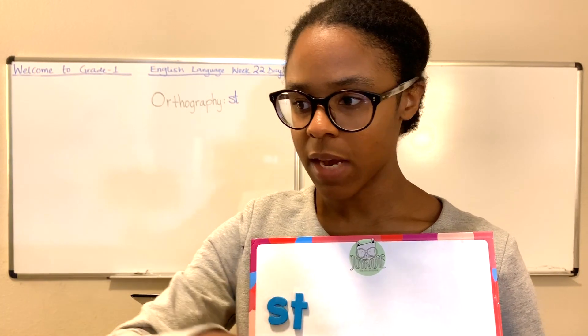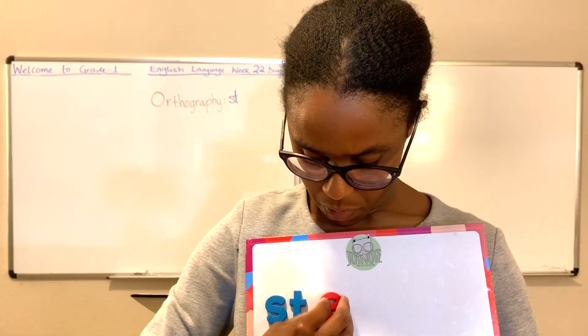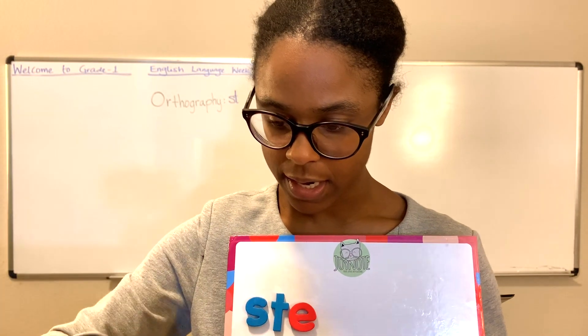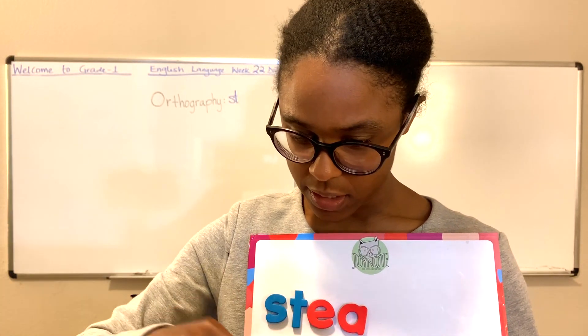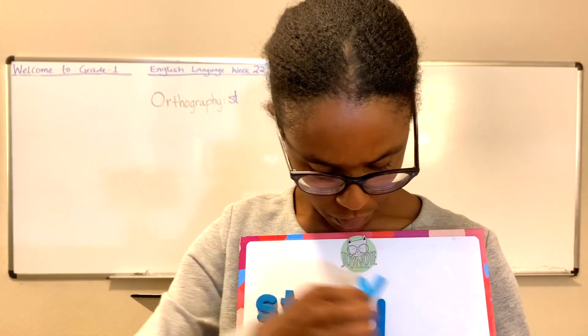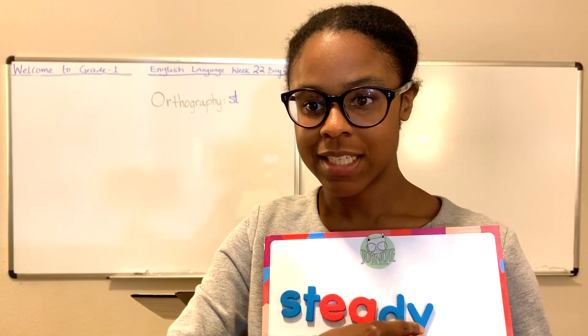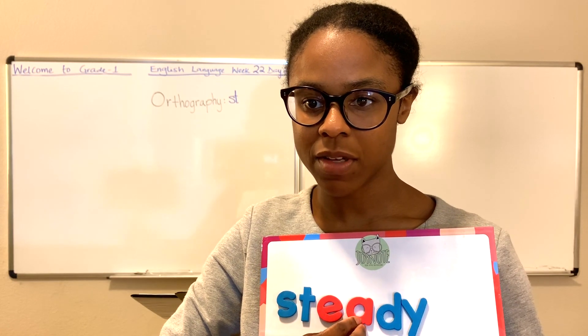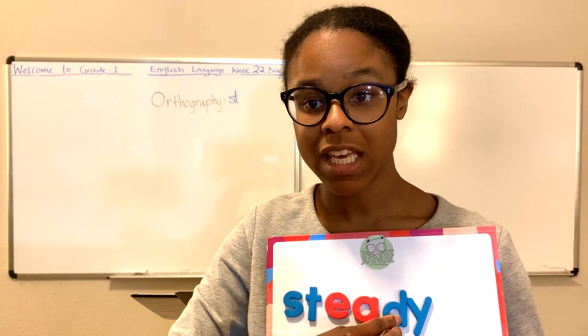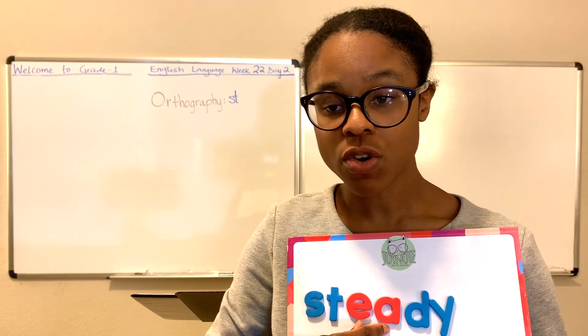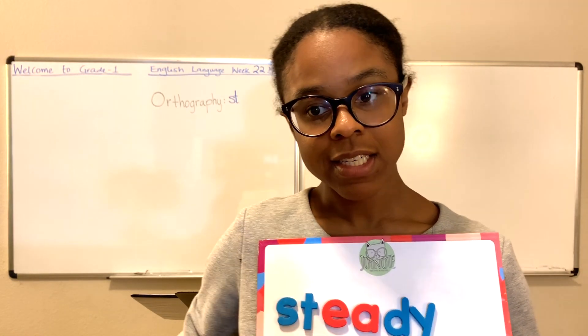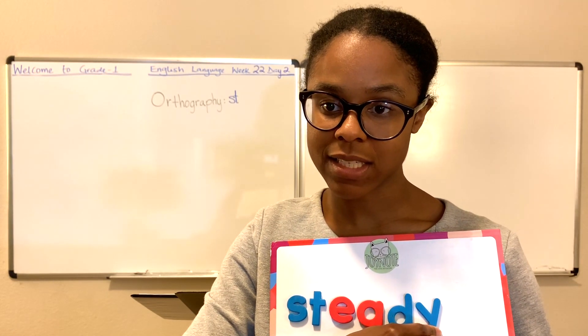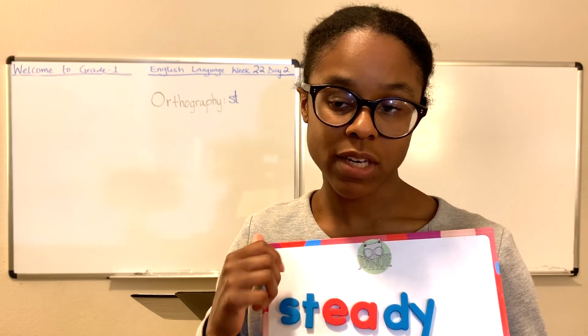Let's try replacing the vowel A with the vowel E. What about if we add A, D, and a Y? What word is this? 'Steady.' We talked about E-A coming together to make either a long E sound as in 'each' (E-A-C-H), or a short E sound as in 'bread' (B-R-E-A-D). In this context it is a short E sound — steady.